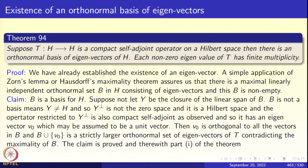Now let us look at Theorem 94, the completion of the proof of the spectral theorem. Suppose T from H to H is a compact self-adjoint operator on a Hilbert space; then there is an orthonormal basis of eigenvectors of H. Each non-zero eigenvalue has finite multiplicity — if lambda ≠ 0 is an eigenvalue, there are only finitely many linearly independent eigenvectors associated with it (the geometric multiplicity). We apply Zorn's lemma or the Hausdorff maximality theorem to show there is a maximal orthonormal set of eigenvectors.